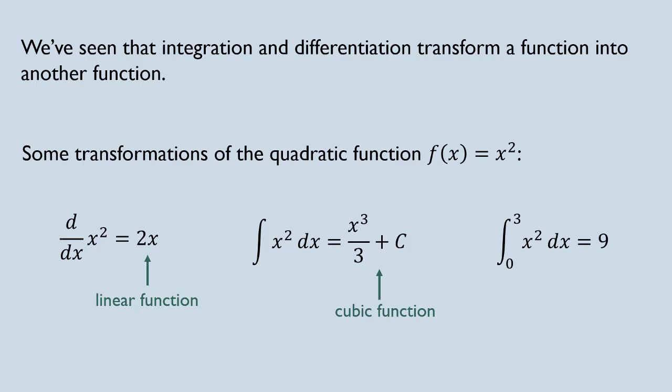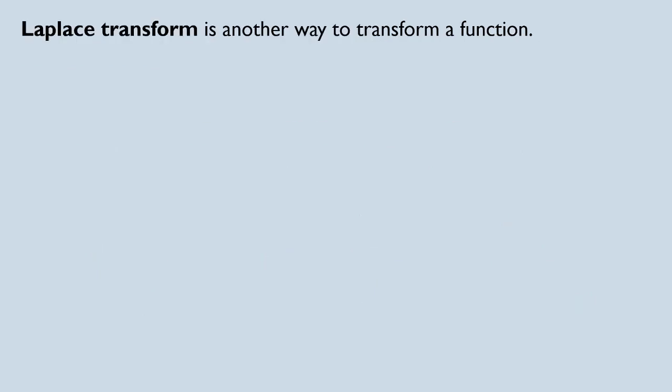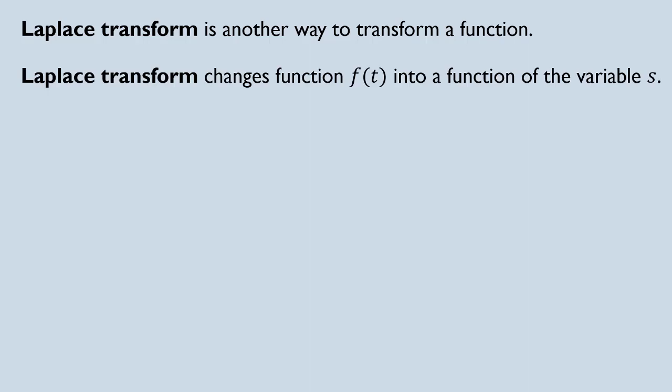And if we evaluate the definite integral of x squared from 0 to 3, then we're going to obtain a constant, 9. We know that there are certain rules and laws that we should follow when we perform all these operations. Laplace transform is another way to transform a function, and it has its own rules that we have to follow. When we perform Laplace transform, we change one function into another function of a different variable. For example, function f changes to a function of the variable s. And of course, the names of variables are not as important as how you perform Laplace transform.